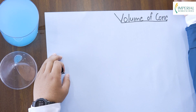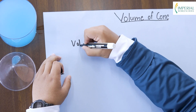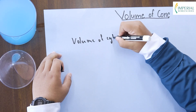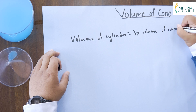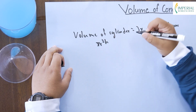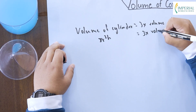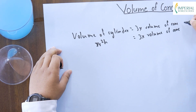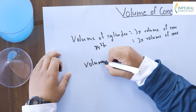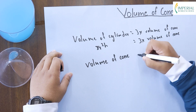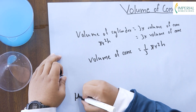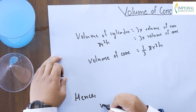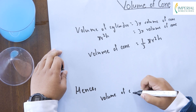Now that we have done the practical demonstration, let me show you this theory on paper so it's easier for you to understand. From this experiment, we have found that the volume of a cylinder is three times that of the volume of a cone. So pi r squared h, which is the volume of a cylinder, is equal to three times the volume of a cone. Therefore, the volume of a cone equals one-third pi r squared h. Hence, we can conclude from this video that the volume of a cone is one-third pi r squared h.